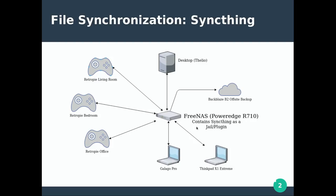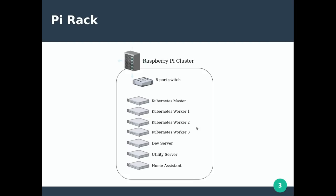Another slide I have for you is about my Raspberry Pi rack — I call it a cluster. Four of these nodes are part of a Kubernetes cluster. I have an eight port switch inside the case. I have a dev server which has some of my source code and git files. I have a utility server which has things like Nagios, which I will show you in this video. And then I also have Home Assistant for home automation, basically controlling my light bulbs and things like that.